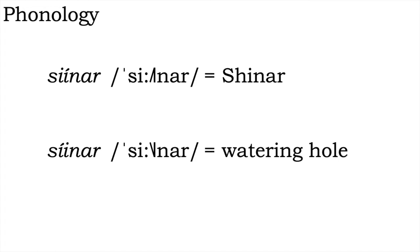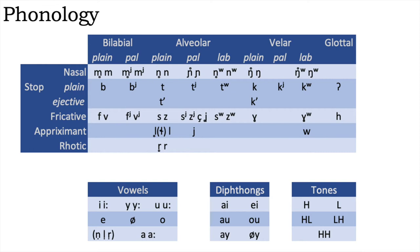The first word, Sienar, we've seen already and means Shinar, the place from the Bible. The second, Sienar, means watering hole. The phonotactics are quite complex, so I won't get into them here. After all, this is only a teaser video. Now onto grammar.